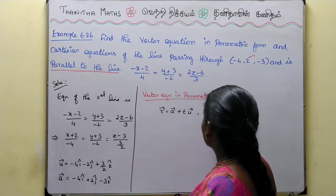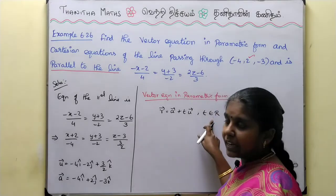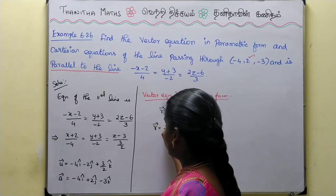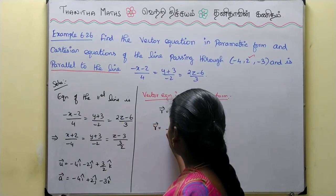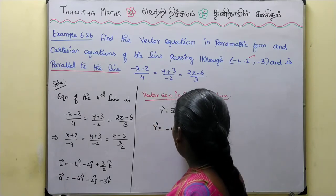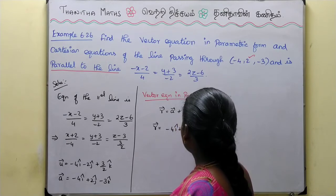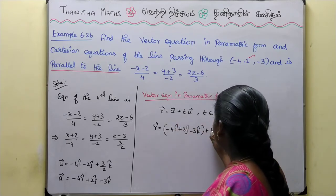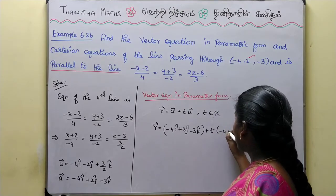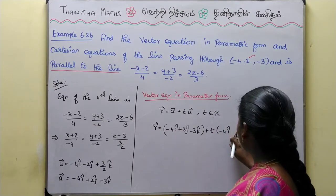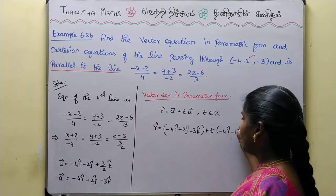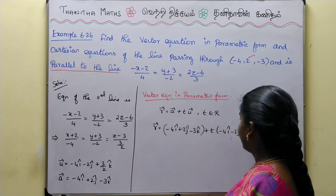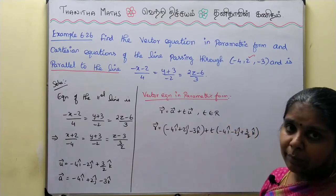Where t belongs to R — t can take any real number. So r-vector equals minus 4i-cap plus 2j-cap minus 3k-cap, plus t times (minus 4i-cap minus 2j-cap plus 3/2 k-cap). This is the vector equation in parametric form.